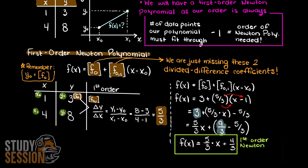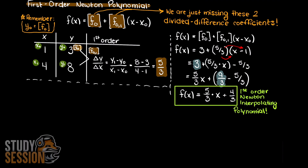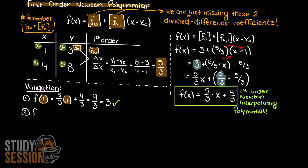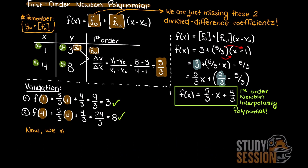Now let's take a minute and try to validate our answer. We know that all of our x points must give our y points, as interpolating polynomials must pass through all our supplied data points. And in this case we can see that we have done it correctly. Lastly, we are asked to solve for the output of our Newton polynomial for an input of 2. This results in an output of 4.66 repeating, and that is the answer to the question we were initially asked.